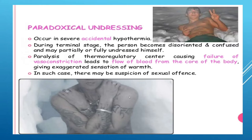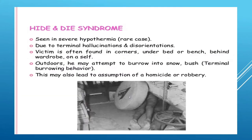A paradoxical phenomenon in severe accidental hypothermia is 'paradoxical undressing,' occurring during the terminal stage when the person becomes disoriented and confused and may partially or fully undress themselves. Paralysis of the thermoregulatory center causes failure of vasoconstriction, leading to blood flow from the body's core, giving an exaggerated sensation of warmth. This may be mistakenly associated with a suspicious sexual assault but is purely a hypothermia phenomenon.